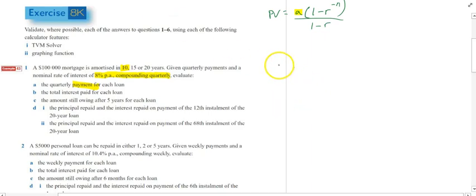Now the present value is $100,000. That's going to be equal to A bracket 1 minus R. Now R is our growth rate. That's going to be 1 plus 0.08 divided by 12... sorry, compounding quarterly, divided by 4.